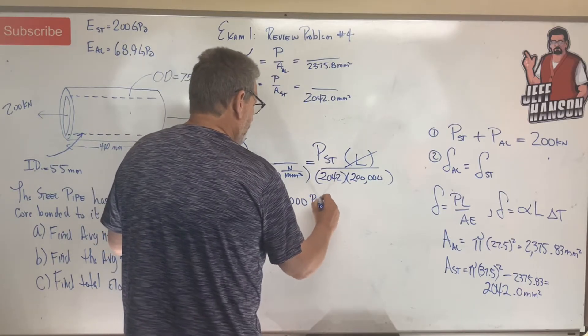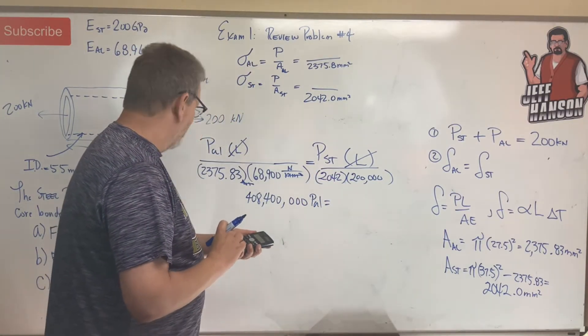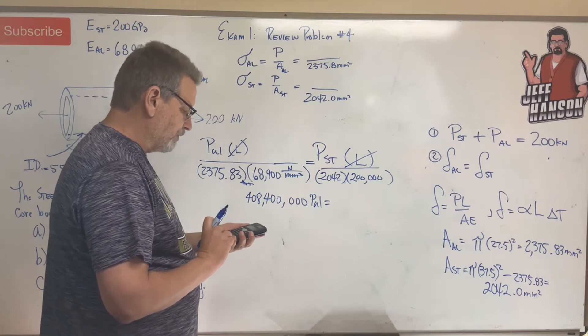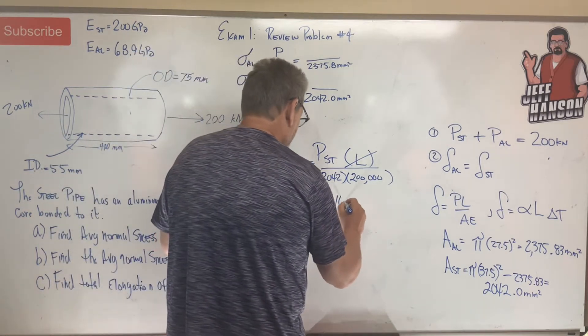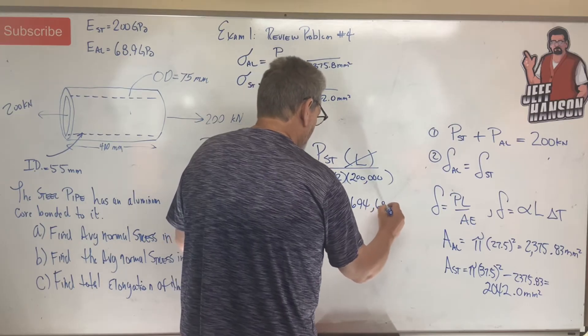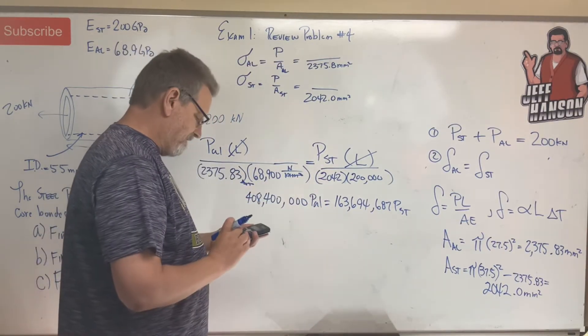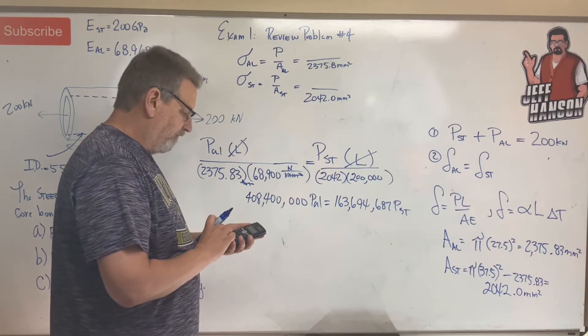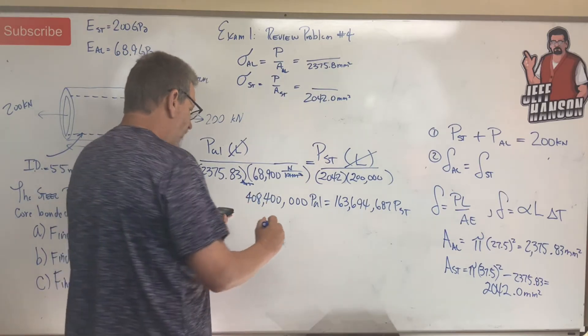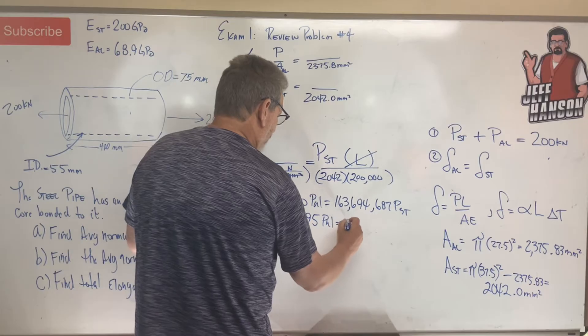And that's P aluminum. What did I do? I multiply that times this side, I'm going to multiply that times that side. 2375.83 times 68,900 equals 163,694,687. P steel, let's see, let's take that number and divide it by that number. 408,400,000 divided by answer equals 2.495 P-AL equals P-ST. We just got a ratio there, relating P-AL to P-ST. That's super cool.